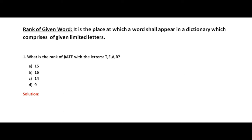Let us go to the first question: what is the rank of RATE with the letters E, A, R, T? In a dictionary, the words are arranged alphabetically. So we have four letters total, and first we arrange them alphabetically: A, E, R, T. Now we will see how many words can be formed with the first letter as A.